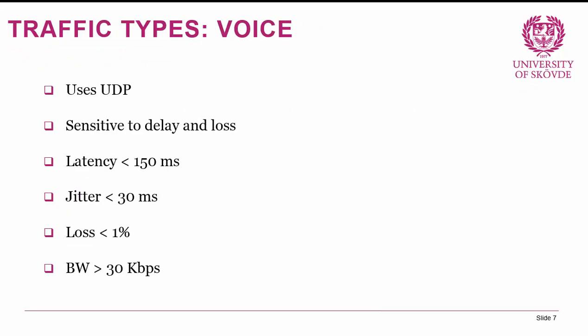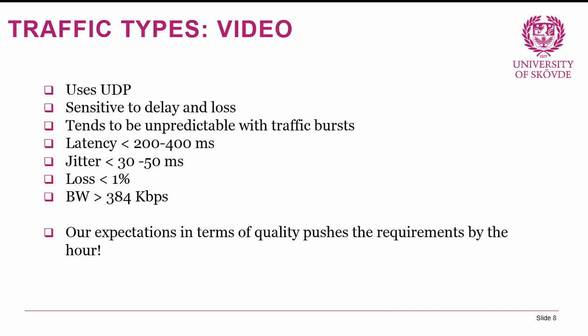Voice traffic uses UDP and doesn't retransmit packets. Voice over IP is a predictable, steady stream of data — we can basically know how much data is sent during a call. It's very sensitive to delay and loss. In numbers: latency should be less than 150 milliseconds, jitter less than 30 milliseconds, and packet loss less than 1%. Cisco states a minimum bitrate of 30 kilobits per second.